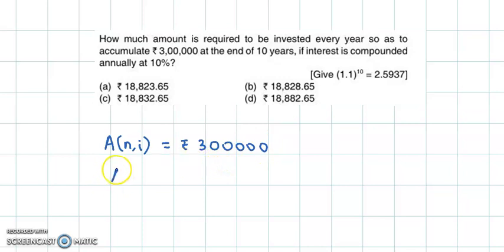We have to find the annuity, that is the amount to be invested each year. Time duration is 10 years, so n is equal to 10, and rate of interest is 10% per annum, so we convert this in decimal form as 10 by 100, which is 0.1.